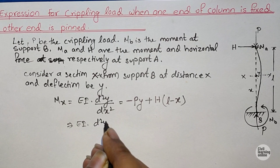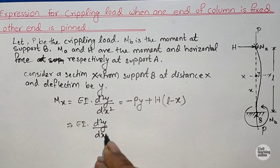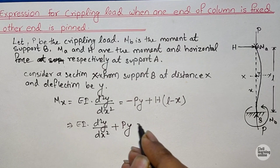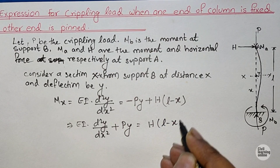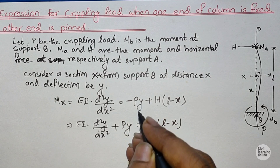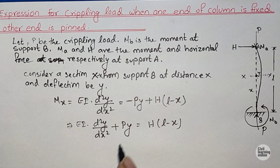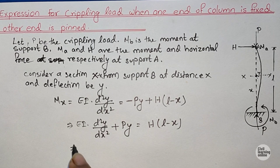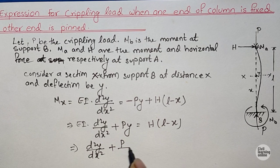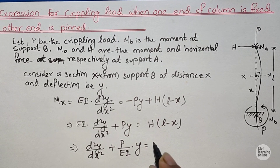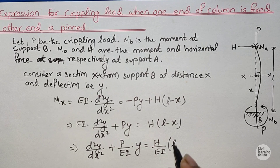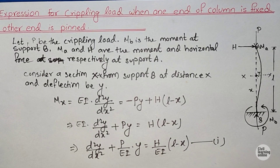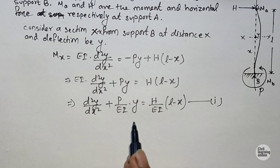Rearranging, EI times d²y/dx² plus Py equals H times (L minus X). Bringing the negative Py to the other side turns it positive. Dividing through by EI, we get: d²y/dx² + (P/EI)·y = (H/EI)·(L minus X). This is Equation 1, our differential equation.